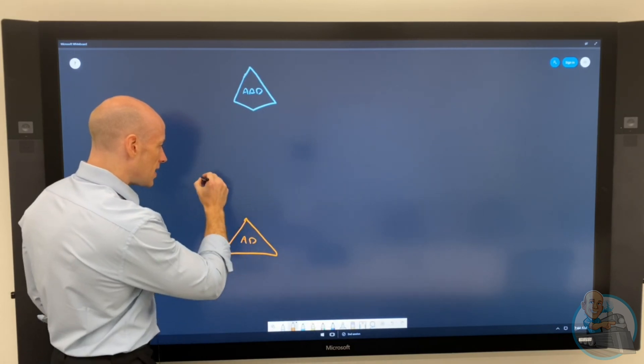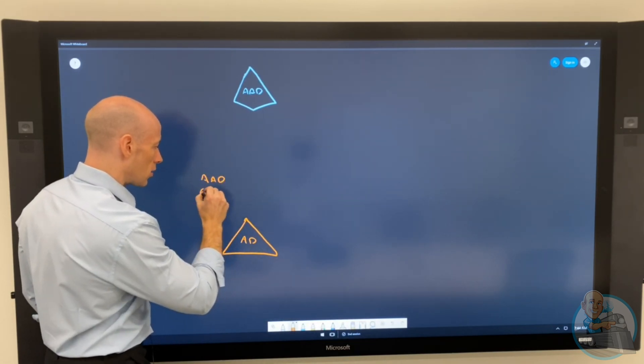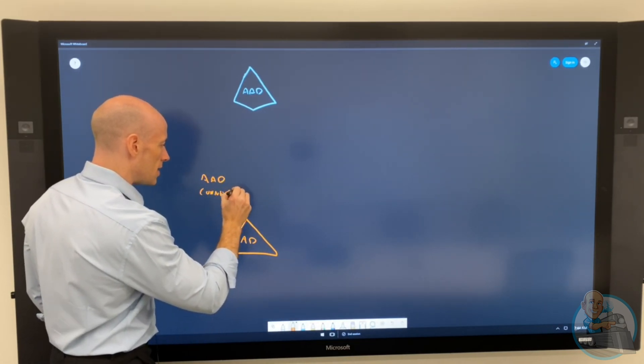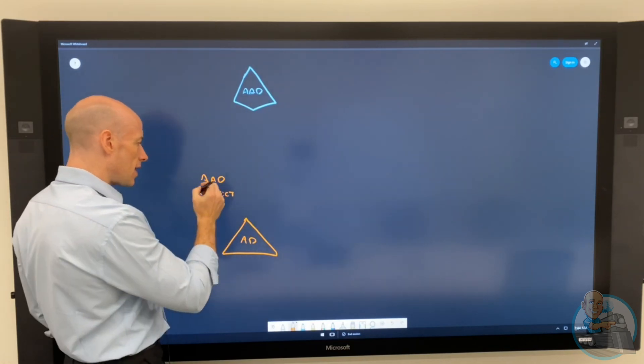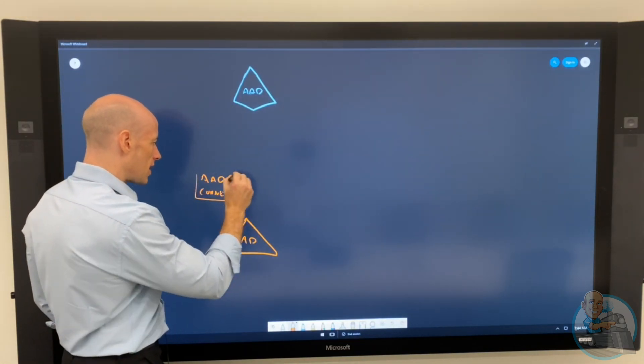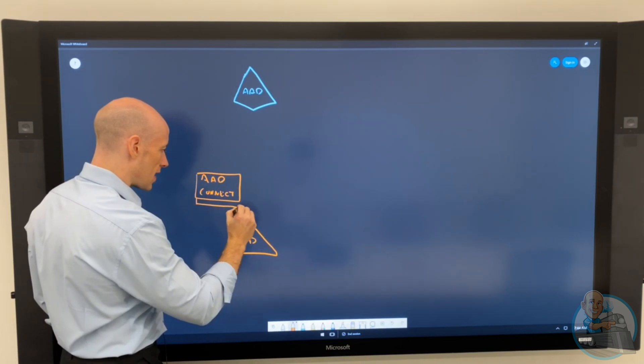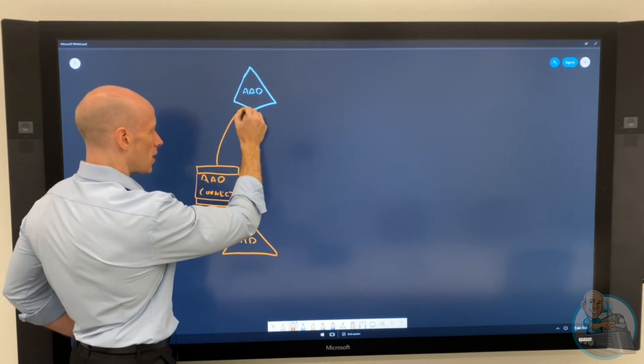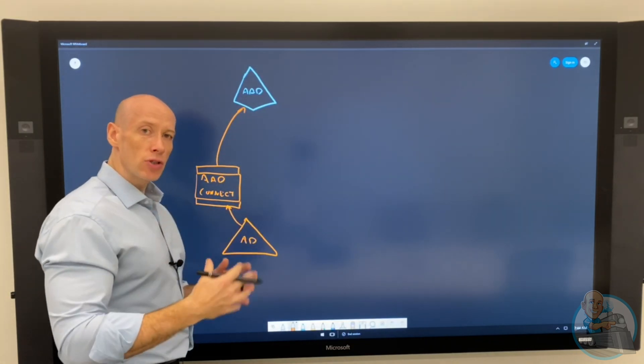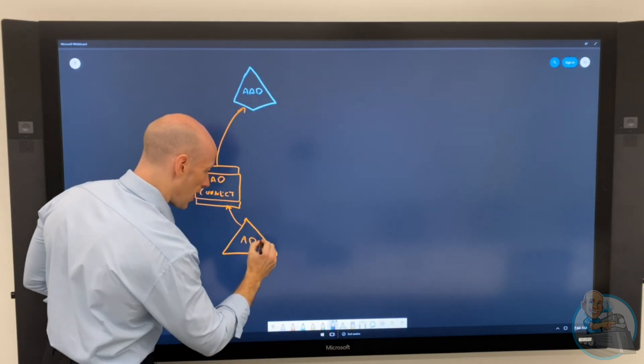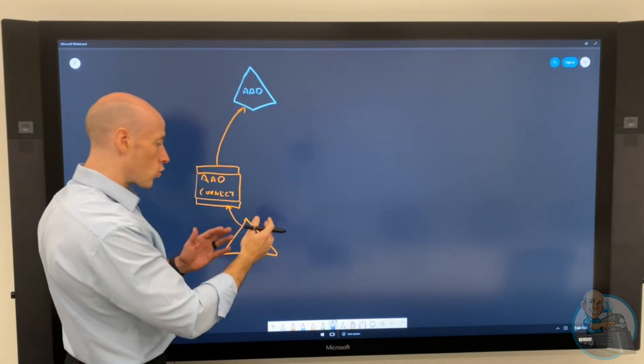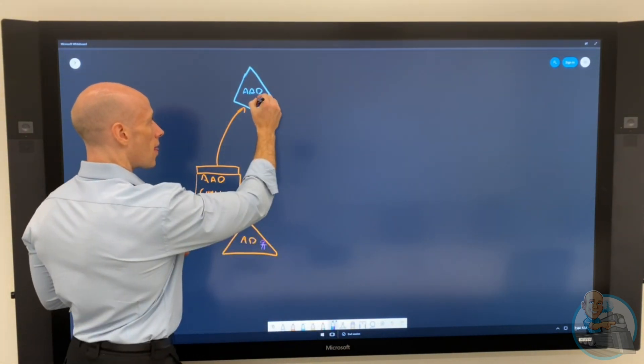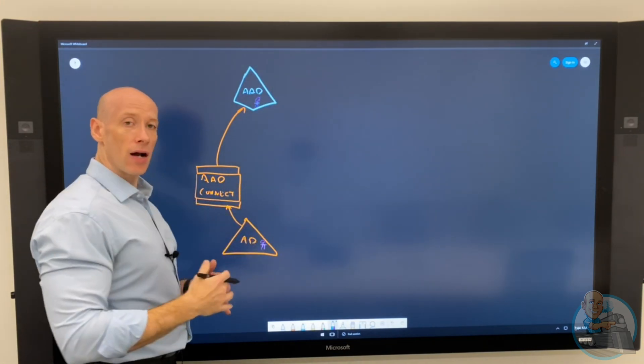I have the AAD Connect component and that does a number of different things, but you can think about one of the things this does is it kind of has this connector space into AD, then this connector space to Azure AD which essentially enables the replication of objects. So if I have a user or group here, they're now up there as well.